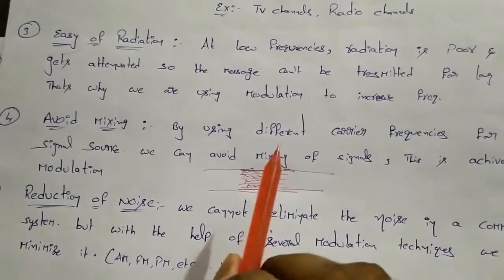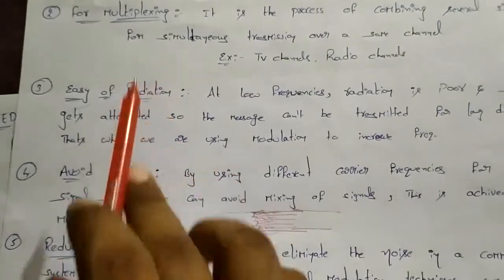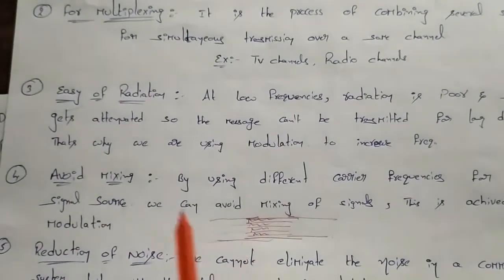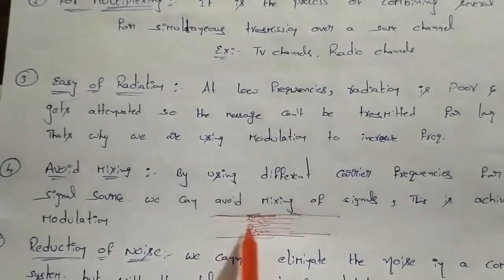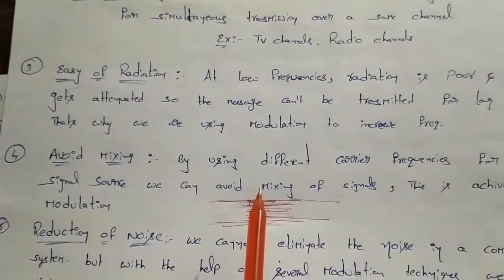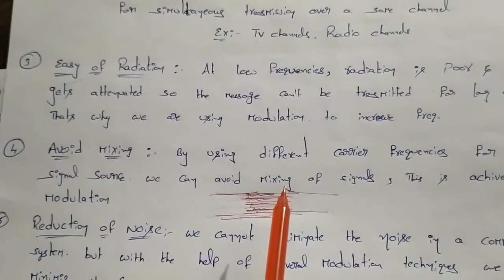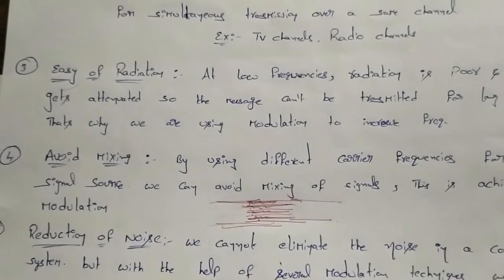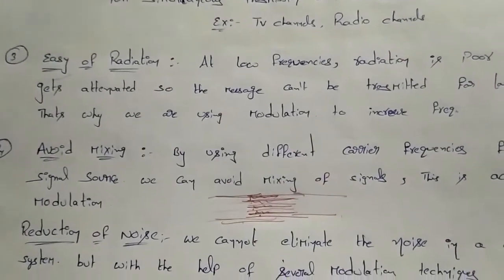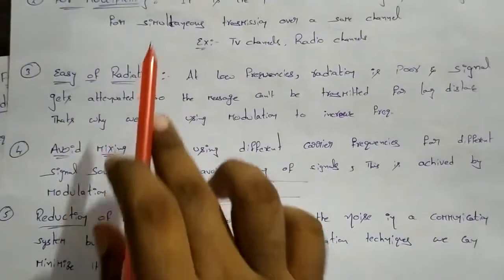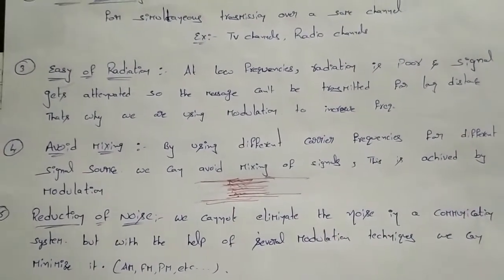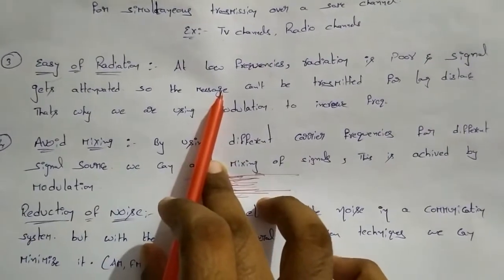Each signal is assigned a different carrier frequency, so multiple channels are combined onto the same single wire without mixing. This is how multiplexing works — multiple channels are possible on a single wire and they are kept separate.